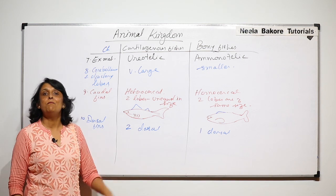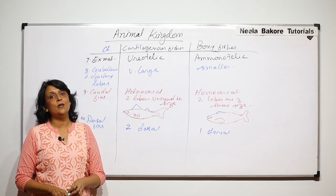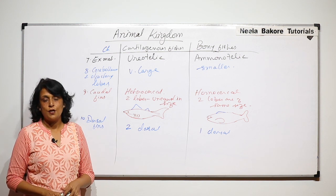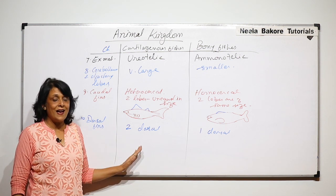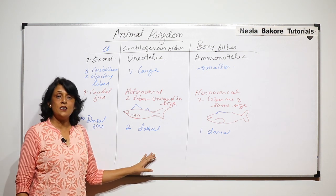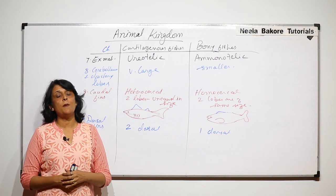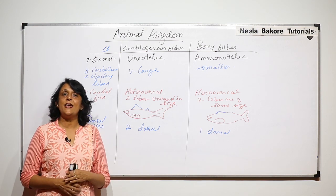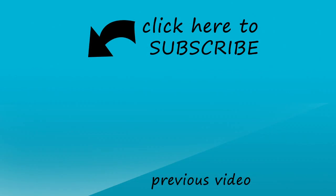These are the comparative points between bony and cartilaginous fishes. This completes our study of class Pisces or fishes. In the next part we will take up the next class, that is Amphibia.